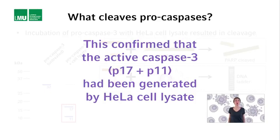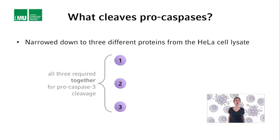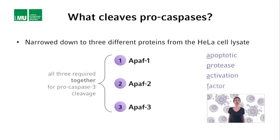What is it in the HeLa cell lysate that causes cleavage of procaspase-3? They used a series of different chromatography steps, and at the end they were left with three different fractions, each containing only one protein. They had to incubate procaspase-3 with all three to get procaspase-3 cleavage — leaving one out resulted in no cleavage. Therefore, all three proteins were required. The three proteins present in these fractions were called APAF1, APAF2, and APAF3, which stands for apoptotic protease activating factors 1, 2, and 3.